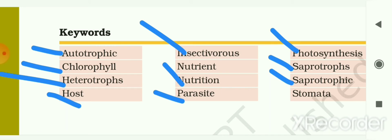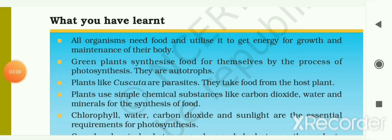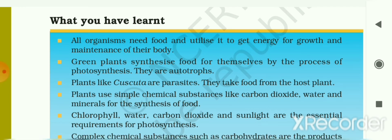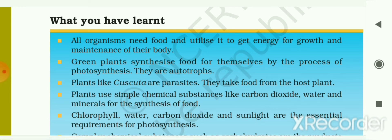Stomata are the tiny pores present on the upper or lower surface of leaves. Now let's recall what we had seen in this chapter. All organisms need food and utilize it to get energy for growth and maintenance of their body.